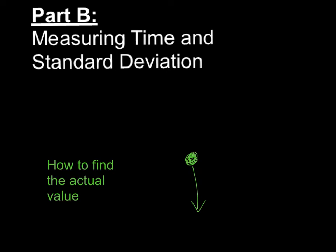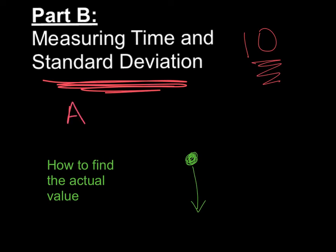In part B, we're going to measure time. To measure time, we're going to drop a ball about 10 times. So you're going to measure something 10 times. And whenever you have more than 10 measurements, you're going to use standard deviation to calculate your error. So it would be average plus or minus standard deviation, which is going to be on your lab handout.